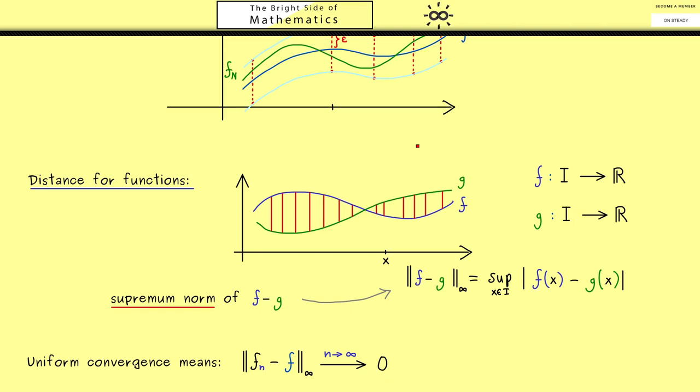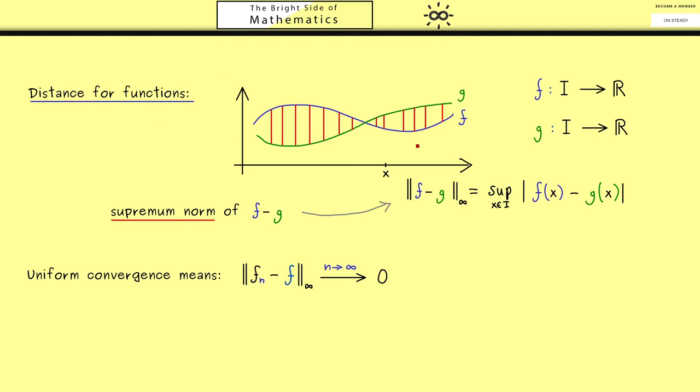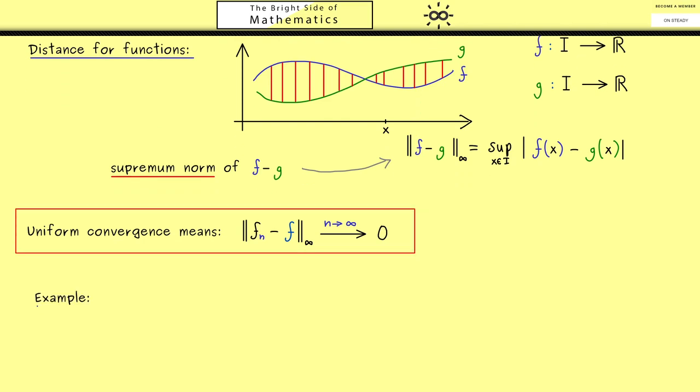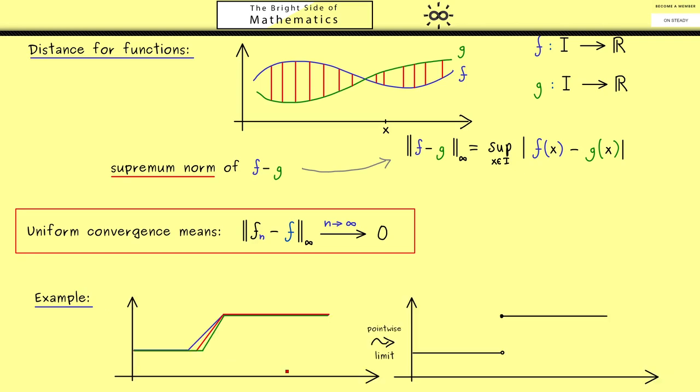Okay, now after all these definitions, let's look at an example. So maybe we should take one we already discussed in the last video. There we had some simple functions that got steeper and steeper here until the pointwise limit was this function. We want to calculate a little bit, therefore let's say this value here is minus 1 and the one above is 1.